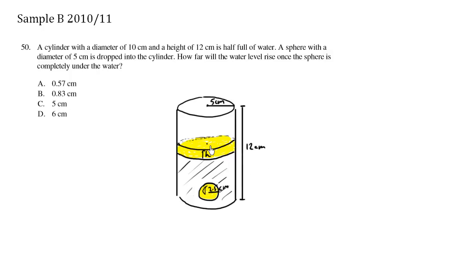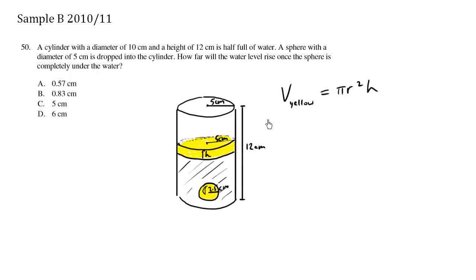This yellow cylinder has a radius which is the same as the main cylinder, which is 5 centimeters. So the volume of the yellow cylinder equals pi R squared times the height H. We can solve for R because R is 5, so we can therefore solve for H.